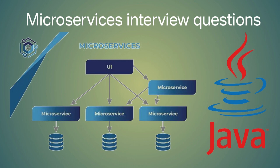How do you handle testing of microservices, both individually and as part of the larger system? To handle testing of microservices, you can use techniques like unit testing, integration testing, and contract testing. You can also use tools like Docker to create isolated test environments for each microservice.